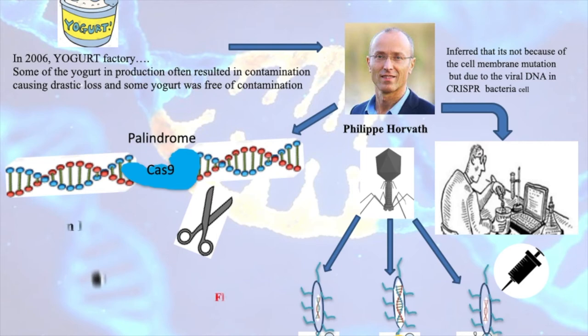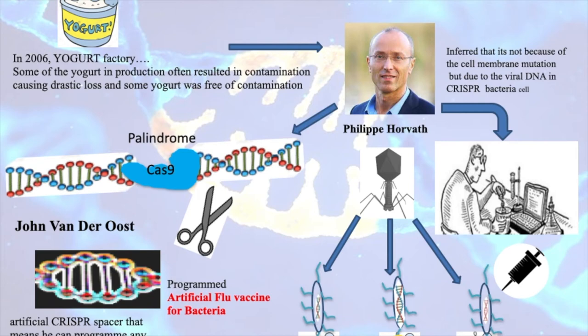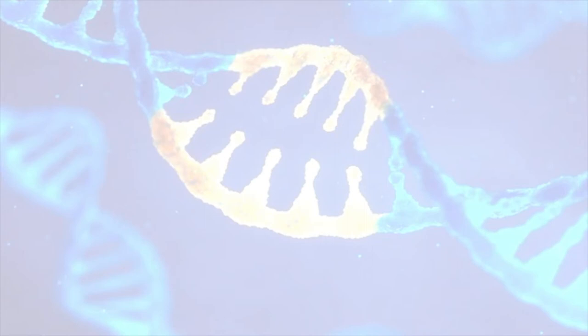Another scientist named John van der Oost was the first person to artificially create an array in the CRISPR spacer. He tried to prove that bacteria can be protected against any type of virus with alterations in the spacer. This essentially acts as an artificially programmed flu vaccine for bacteria.